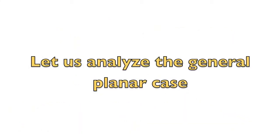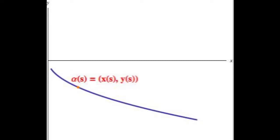In the general case, in order to describe the ramp, we need to find a curve alpha given by two functions, x of s and y of s. Without loss of generality, we will assume that s is arc length parameter.